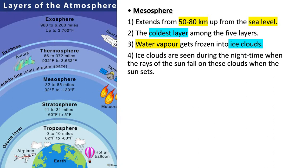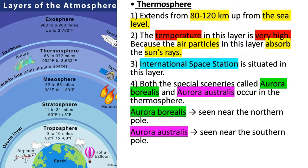Moving on to the third layer, called the mesosphere. This is 50 to 80 kilometers up from the sea level, and it is the coldest layer among all five layers. This is because water vapor gets frozen into ice clouds here. These ice clouds are seen during the night time when the rays of the sun fall on these clouds as the sun sets.